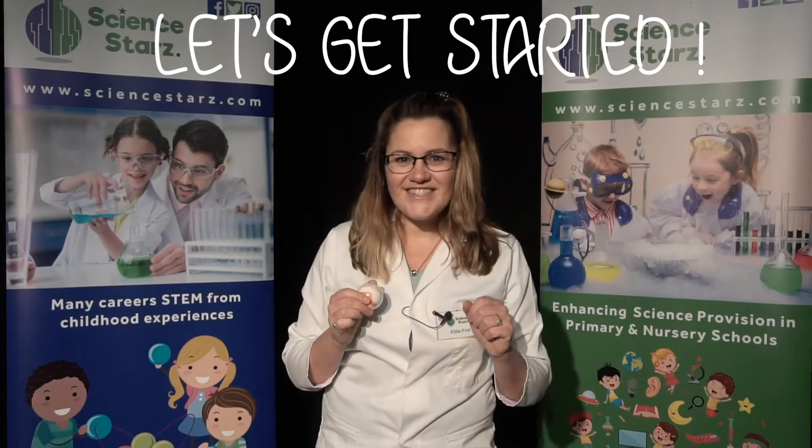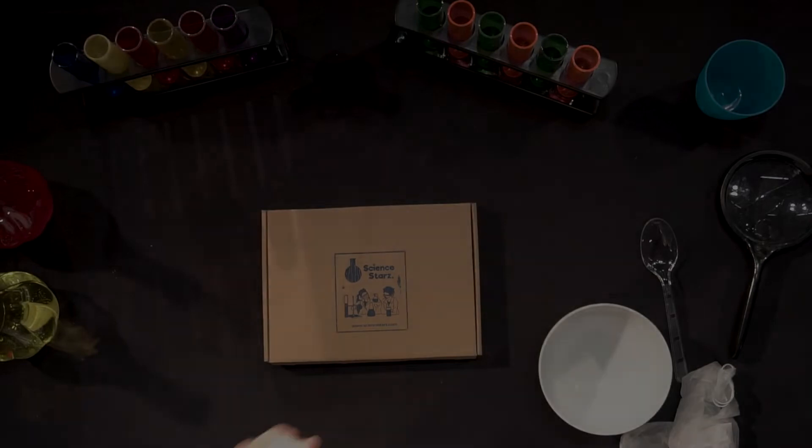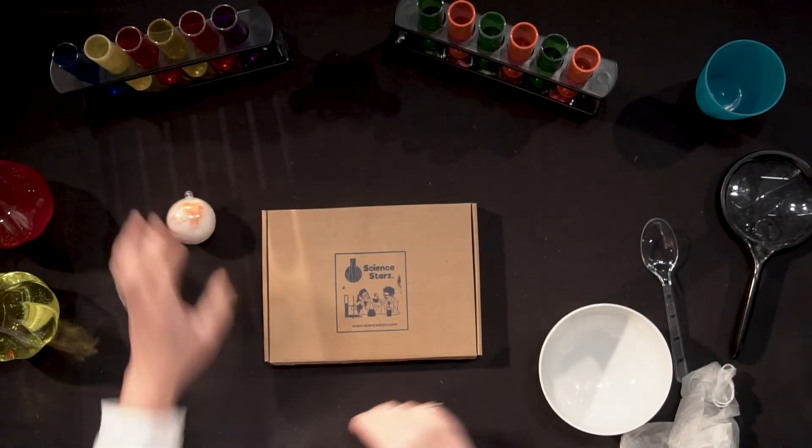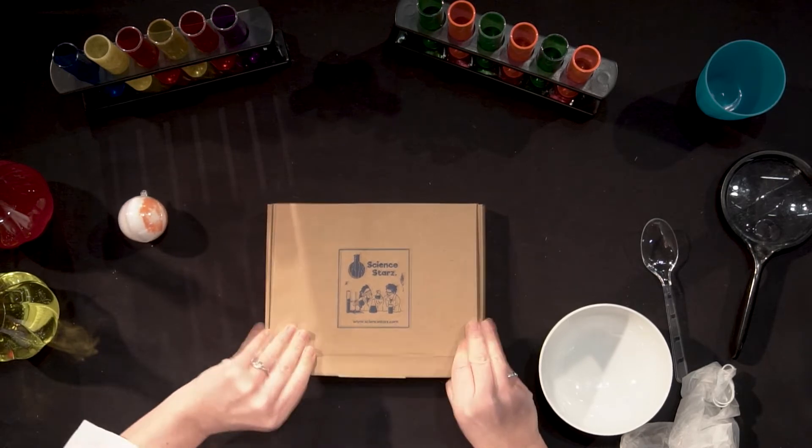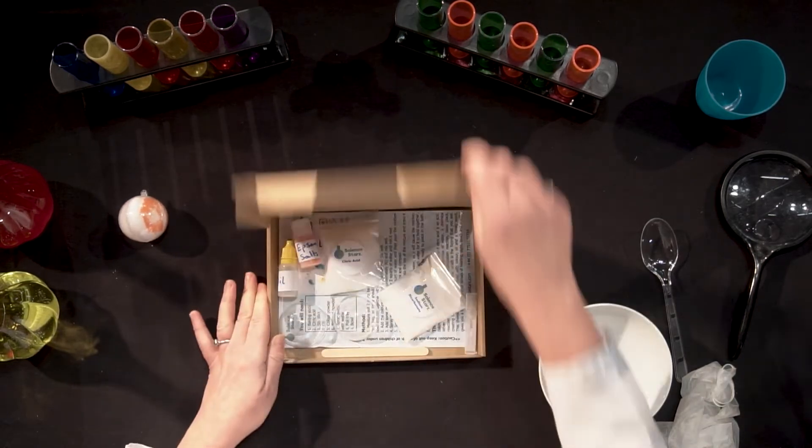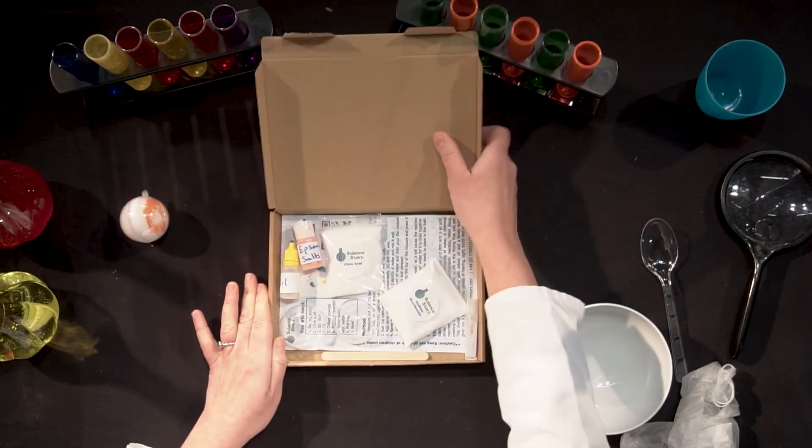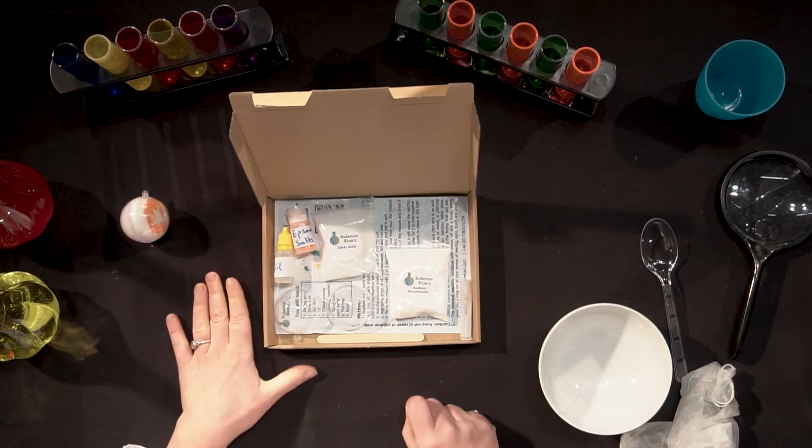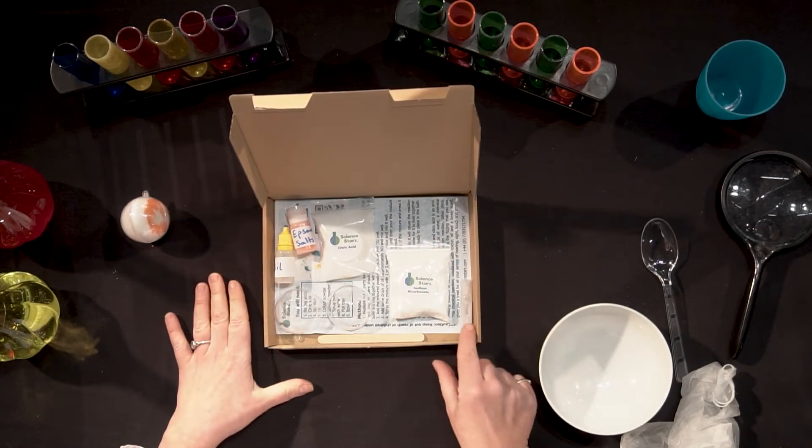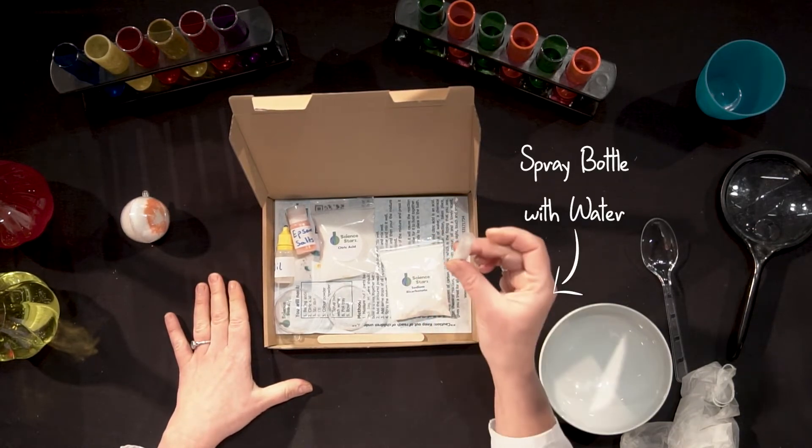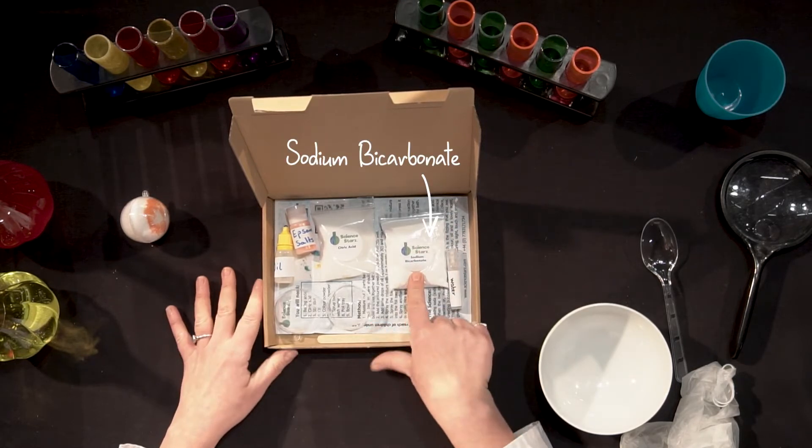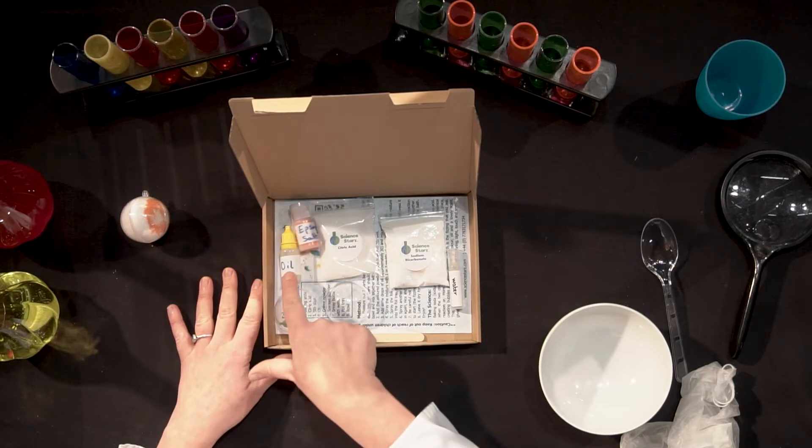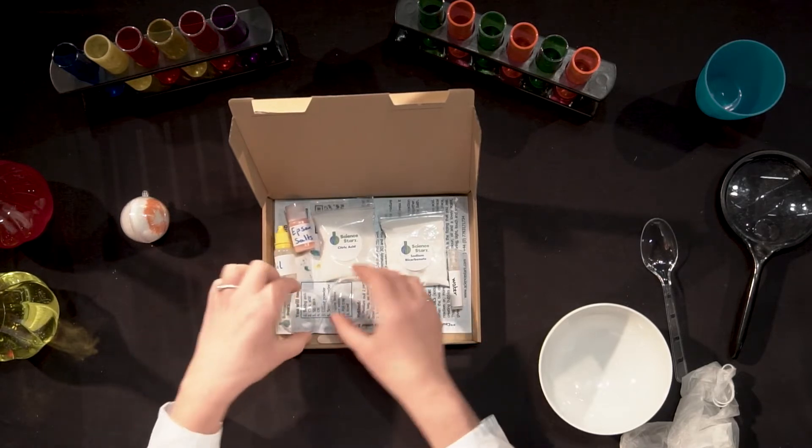So let's get started. So we are going to be making a bath bomb and let's open up our kit and see what's inside. So you should have a spray bottle with water, some sodium bicarbonate, citric acid, epsom salts, and oil.